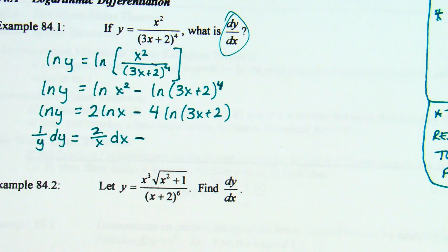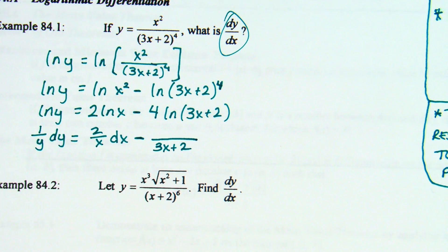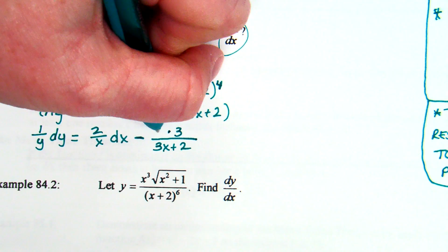Minus — we have a 4 here for the natural log of (3x + 2) term. The derivative of natural log of (3x + 2) is 1 over (3x + 2) times the derivative of (3x + 2), which is 3. So I can write 3 in the numerator, along with the 4 that was already out front, giving 12 over (3x + 2). This term is also in regards to x, so dx.